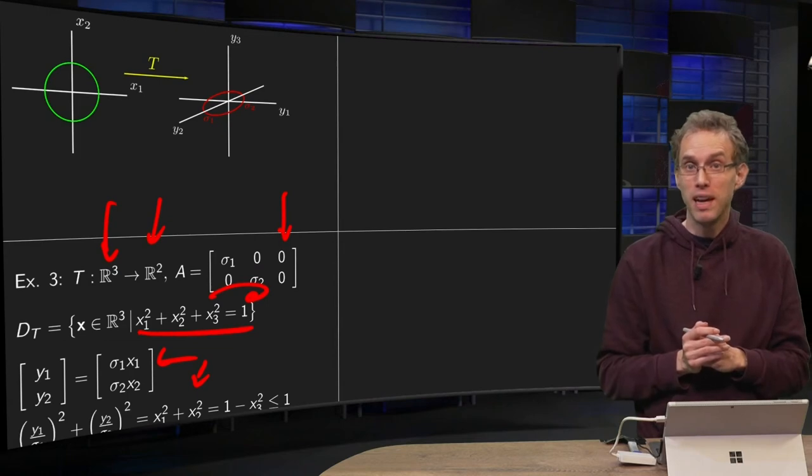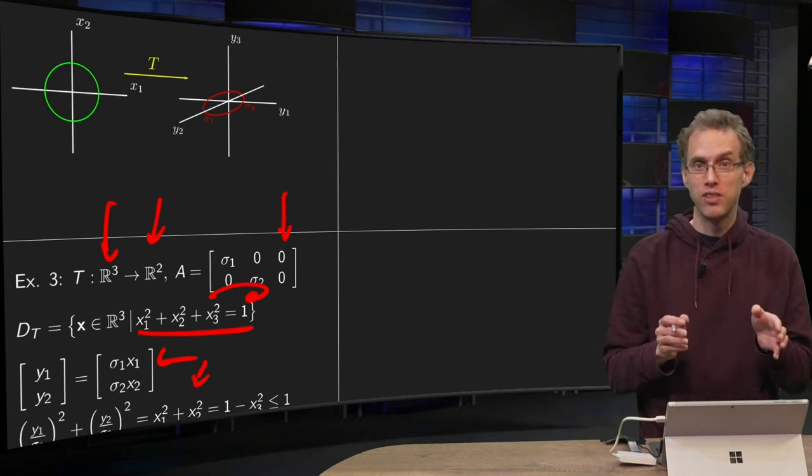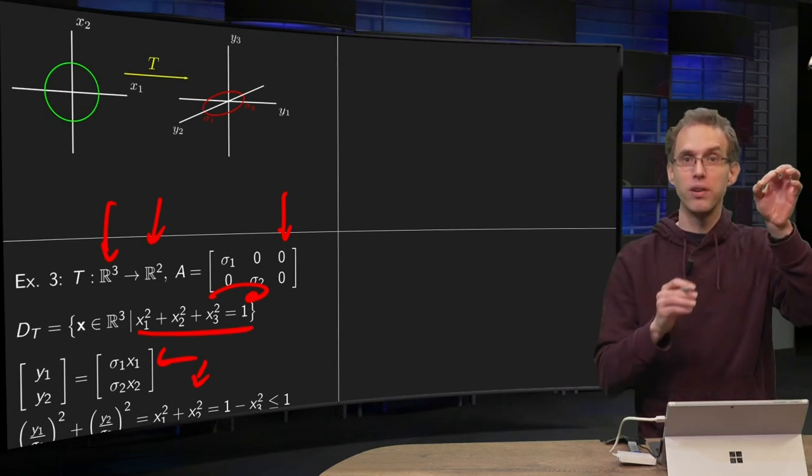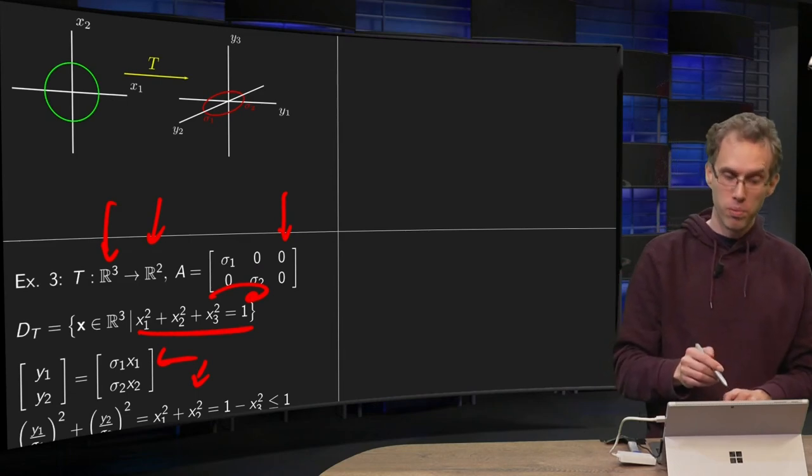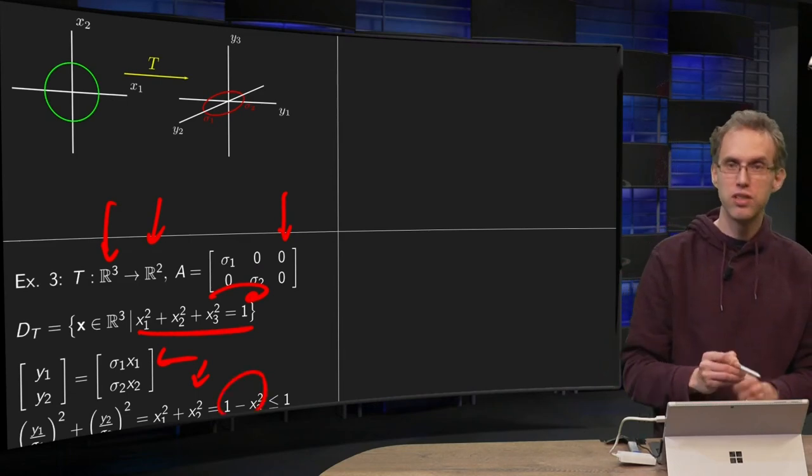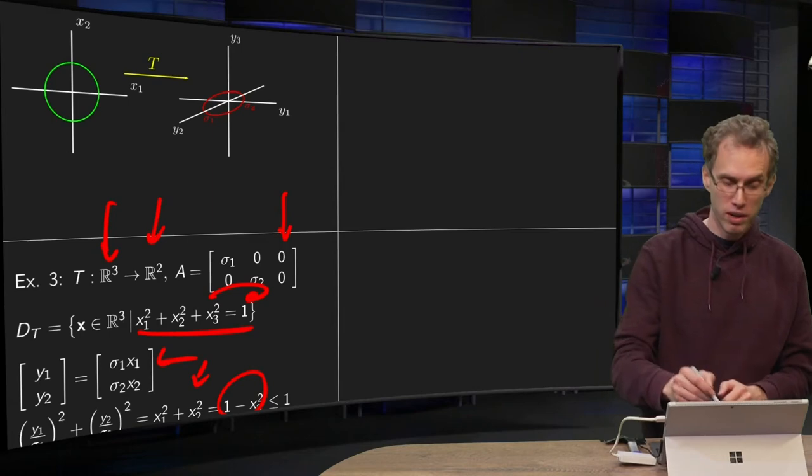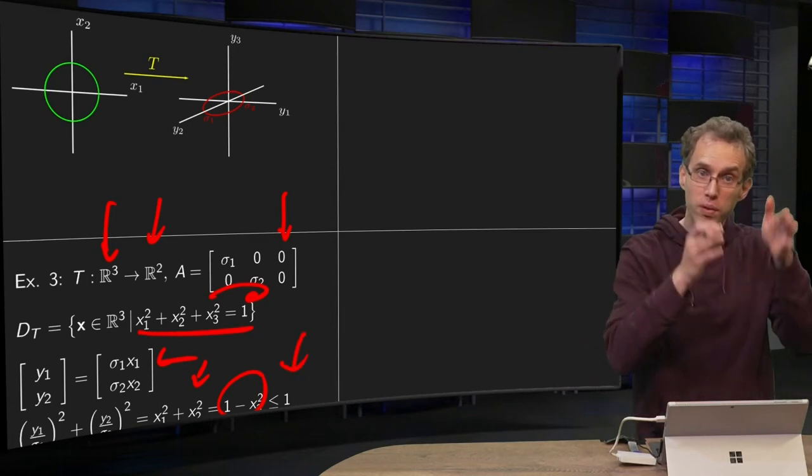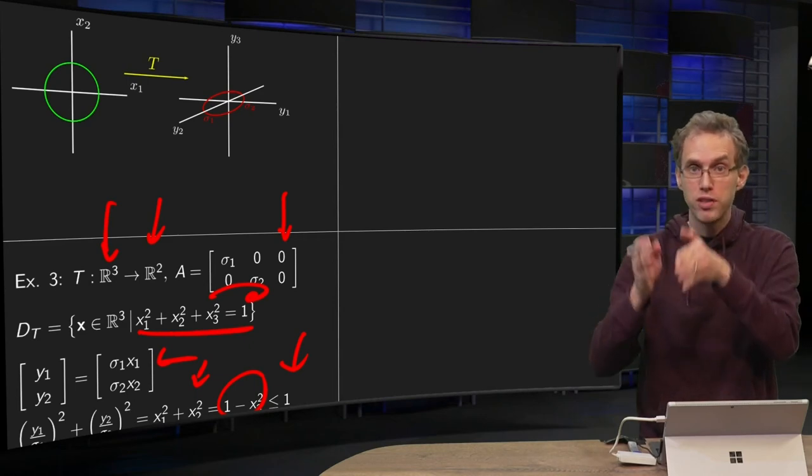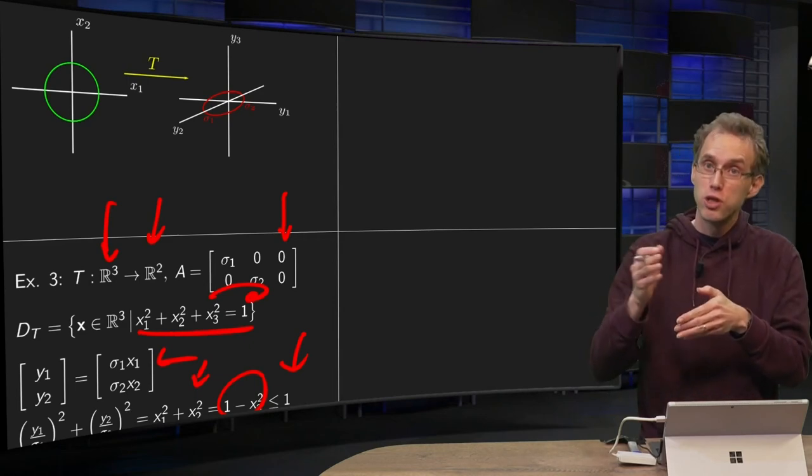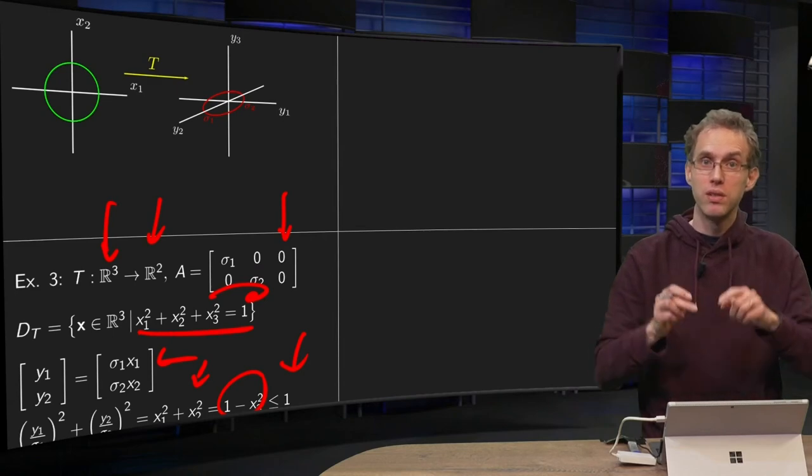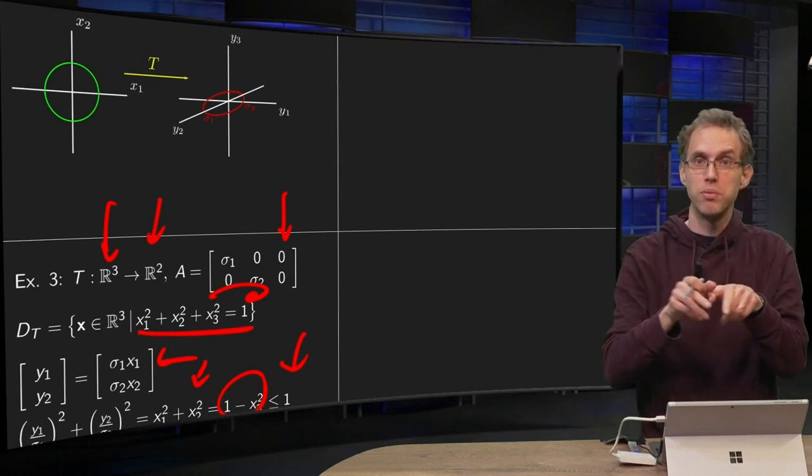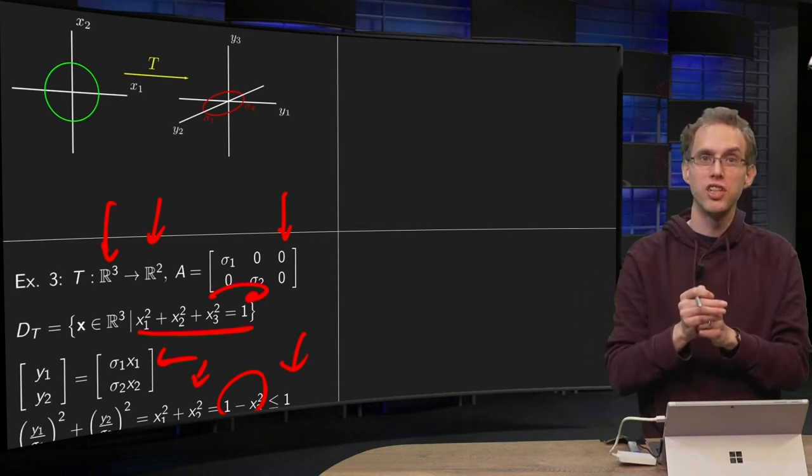And this x_3 can be anything, so this 1 - x_3^2 can be anything from 1 down to 0. So what do we have over here? This stuff over here is smaller or equal than 1. So our equation tells us (y_1/sigma_1)^2 + (y_2/sigma_2)^2 is now smaller or equal than 1.